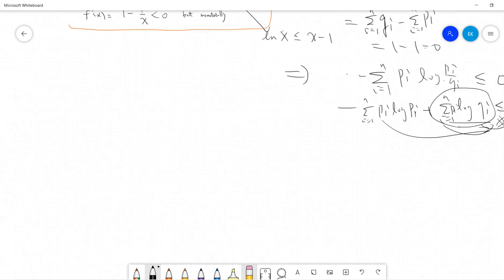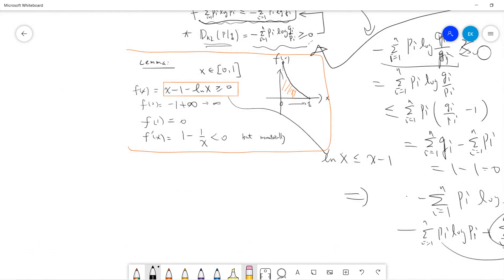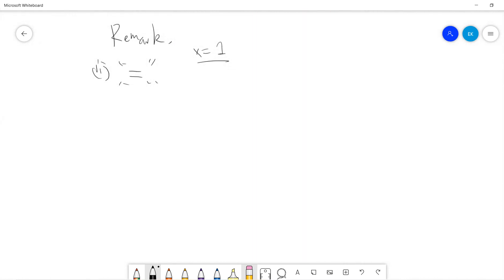Okay, so let me make two remarks. The first remark is, the equality holds if the equality holds means that x equals to 1 in the lemma. In the lemma, x needs to equal to 1. So that means equality holds when Qi equals Pi, right? So that means all of the P and Q are equal probability distributions.